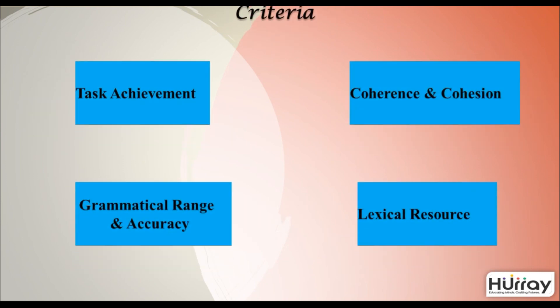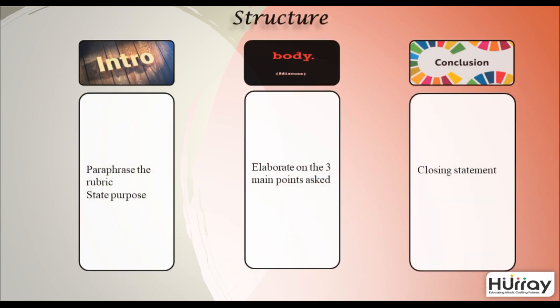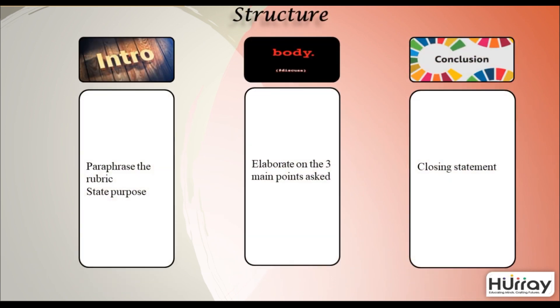The four criteria for Task 1 in writing are: task achievement, coherence and cohesion, grammatical range and accuracy, and lexical resource. The structure of the letter should have an introduction, body, and conclusion.